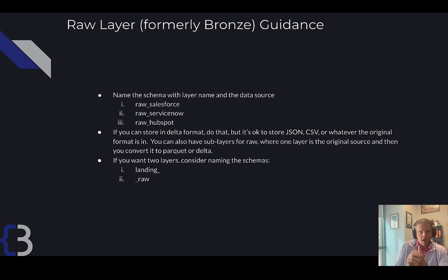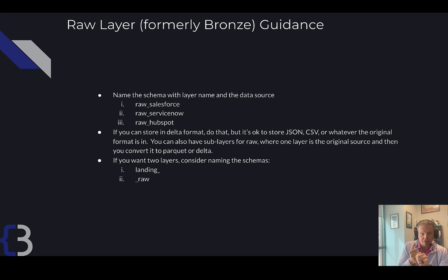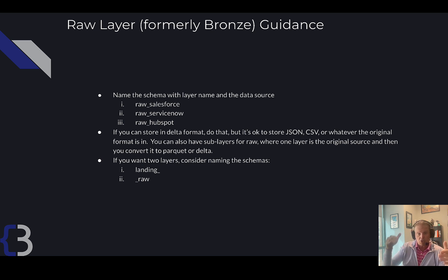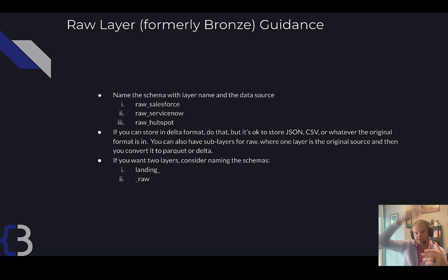In the raw layer — formerly the bronze layer — I think you should name the schema raw underscore followed by the name of the data source. So it would be raw_Salesforce, raw_ServiceNow, raw_HubSpot, raw_Workday, raw_PeopleSoft, raw_Dynamics, or whatever your data source is. The tables underneath should look the same as they did in the original data source — you should not clean or organize anything in any of your raw schemas. If the original API landed JSON, land it in JSON; if it landed CSVs, land it in CSVs.